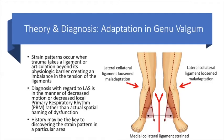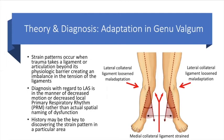So the theory for LAS techniques — which, to do the actual techniques, are a group of somewhat memorized positions to use — is that there's some sort of strain pattern that happens. In this example, I'm giving an example of a stress put on the ligaments, a valgus stress. If we take a valgus stress into the knee, it creates a maladaptation, and the medial collateral ligament gets strained, and perhaps this adaptation is loosened.